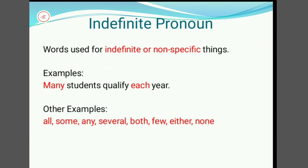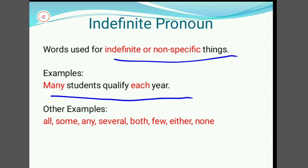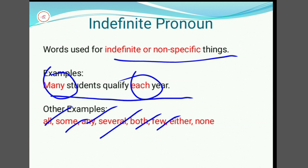Indefinite pronoun: words used for indefinite or non-specific things. They are called indefinite pronouns. For example, 'Many students qualify each year.' Here, 'Each' and 'Many' are indefinite pronouns. Other examples include: All, Some, Any, Several, Both, Few, Other, and None.